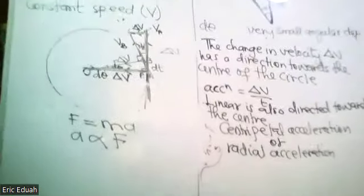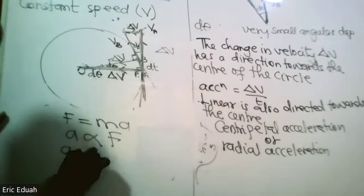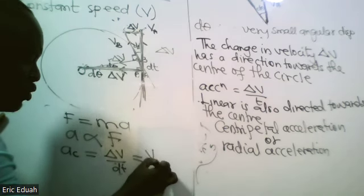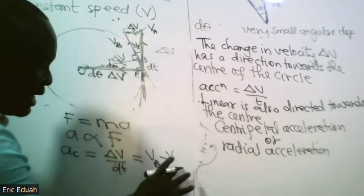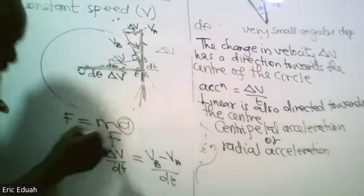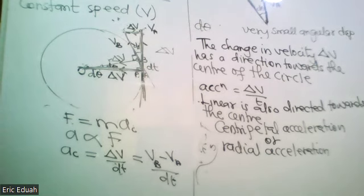Formula-wise, centripetal acceleration equals delta v over dt, or vb minus va over dt. If we can get a relation for centripetal acceleration, we can find the force which creates it. So let's derive an expression for centripetal acceleration — an equation you will use for the rest of your life.